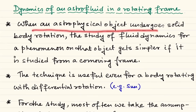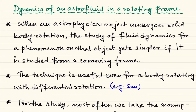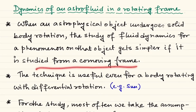When an astrophysical object undergoes solid body rotation — for example, a slowly rotating star — due to turbulent viscosity, they always have the tendency to switch from a state of differential rotation to solid body rotation. For this type of case, the study of fluid dynamics for a phenomenon taking place on that object becomes analytically much simpler if studied from a co-moving frame — that is, a frame rotating with the same angular speed capital Omega.